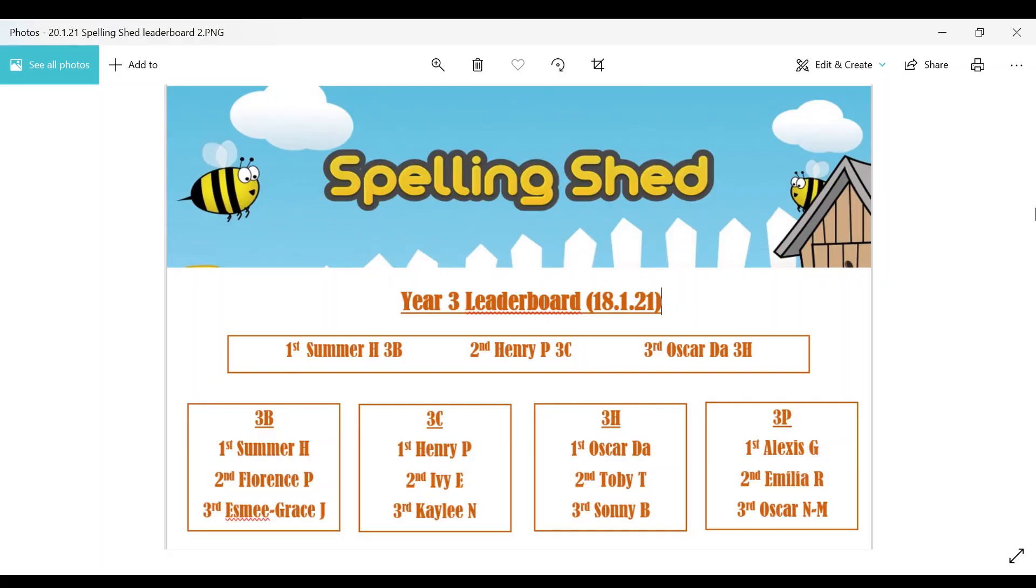There is the Year 3 leaderboard on Spelling Shed. Well done to Summer H in 3B for coming first, Henry P in 3C for coming second, and Oscar DA in 3H for coming third. Those three children will all get two dojo points each, and everybody that also features in the top three per class will get one dojo point.